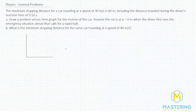Welcome to Mastering Solutions. For this general problem, they tell us that the minimum stopping distance for a car traveling at a speed of 30 meters per second is 60 meters, and that's including the distance that's traveled during the driver's reaction time of half of a second.